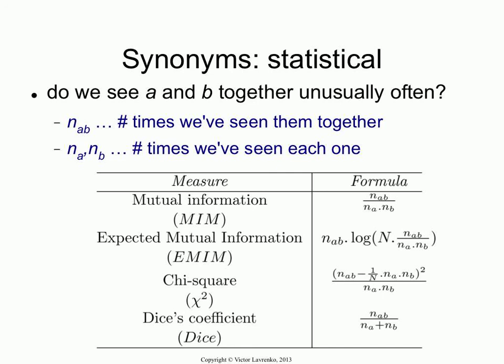Once you have these three numbers, you can start putting them together in various ways. The simplest way is mutual information. You take the number of times that you saw them together and the number of times that you saw them by themselves. This is related to a likelihood ratio test, so you can get a quick sense for what this means.